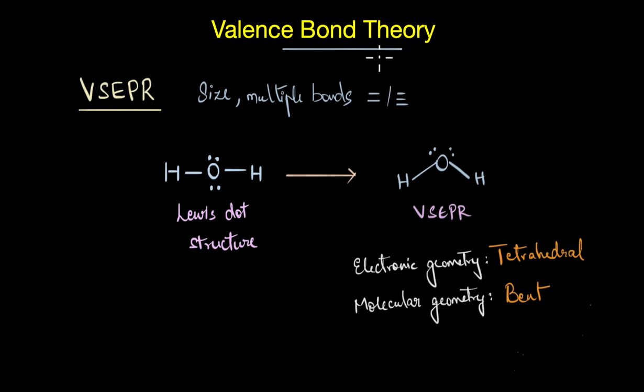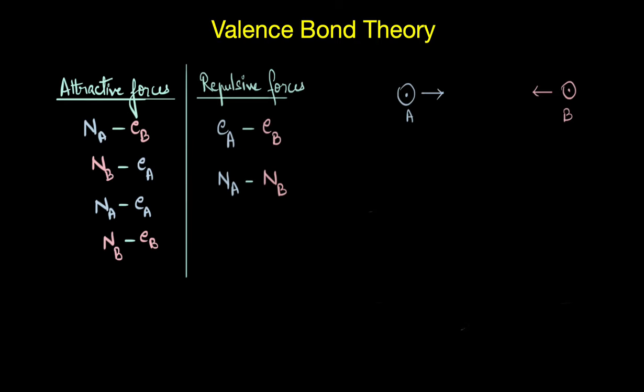VB theory is a quantum mechanical model that explains bonding in terms of overlap of atomic orbitals. You see, when two atoms—let's say A and B—approach each other, there are both attractive and repulsive forces at play here. For example, the nucleus of atom A and the electron of atom B would experience an attractive force. On the other hand, the nucleus of atom A and the nucleus of atom B would experience repulsive force. Similarly, there are other attractive and repulsive forces acting here. As these two atoms approach each other, at a certain stage the attractive forces and the repulsive forces balance out each other.